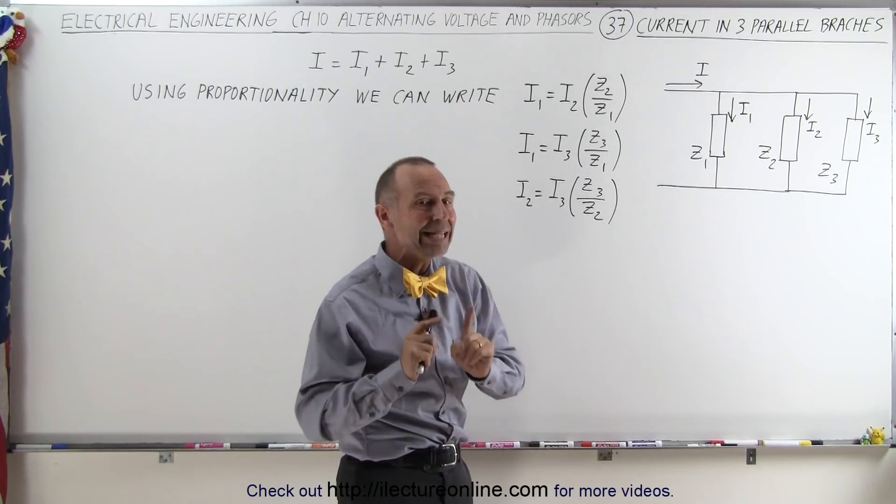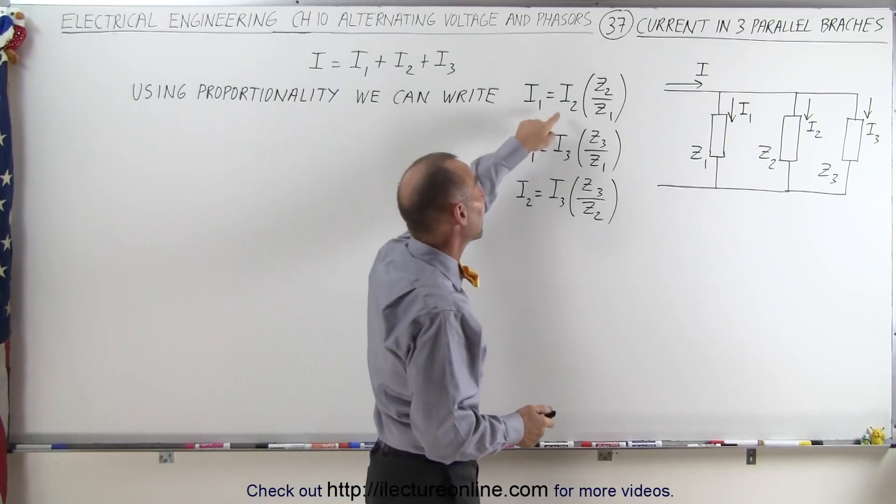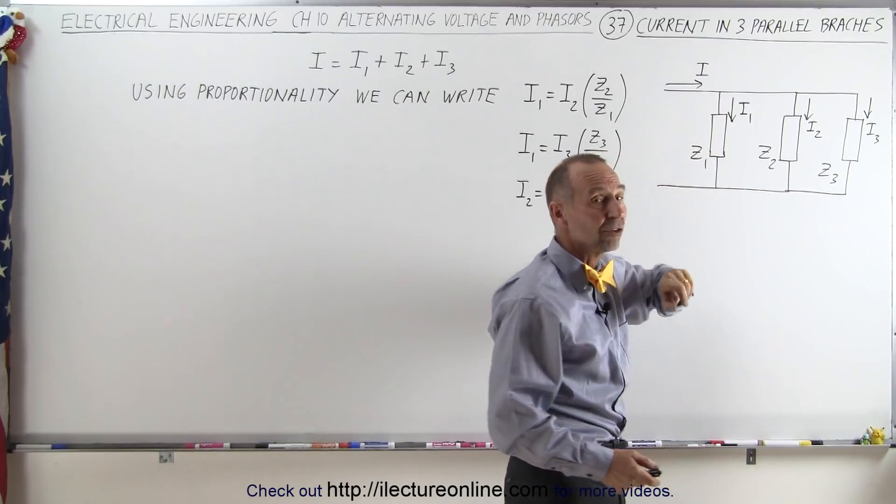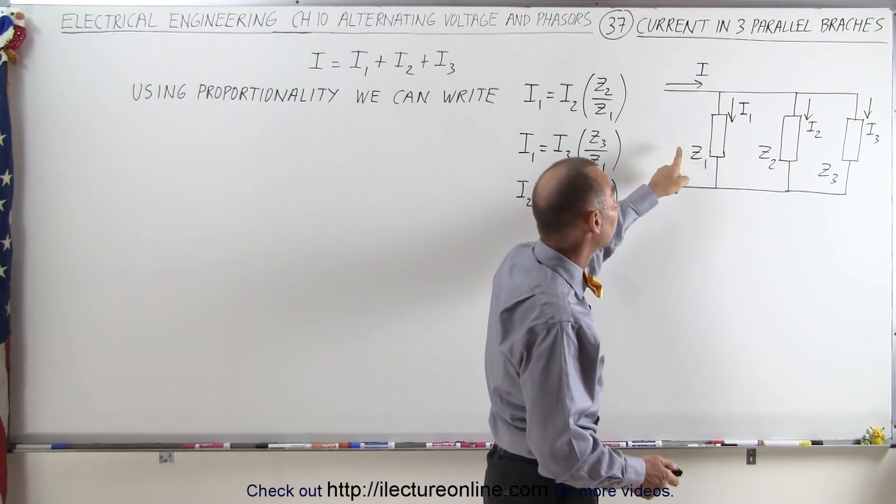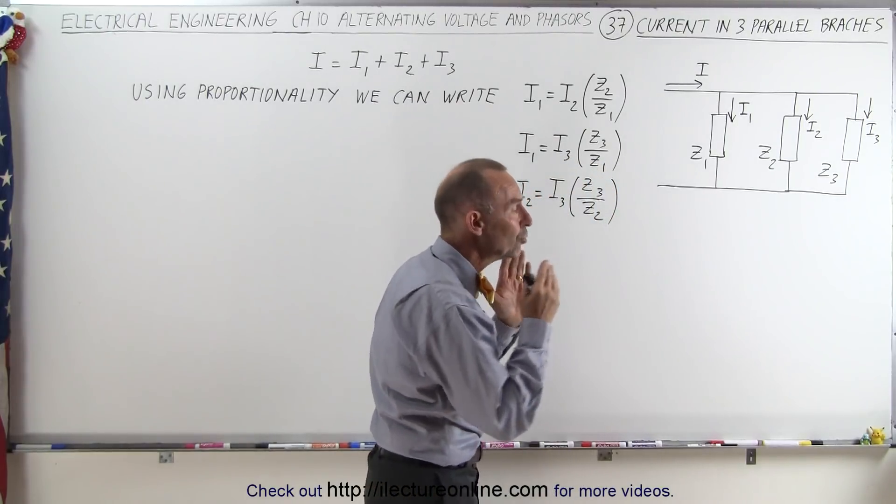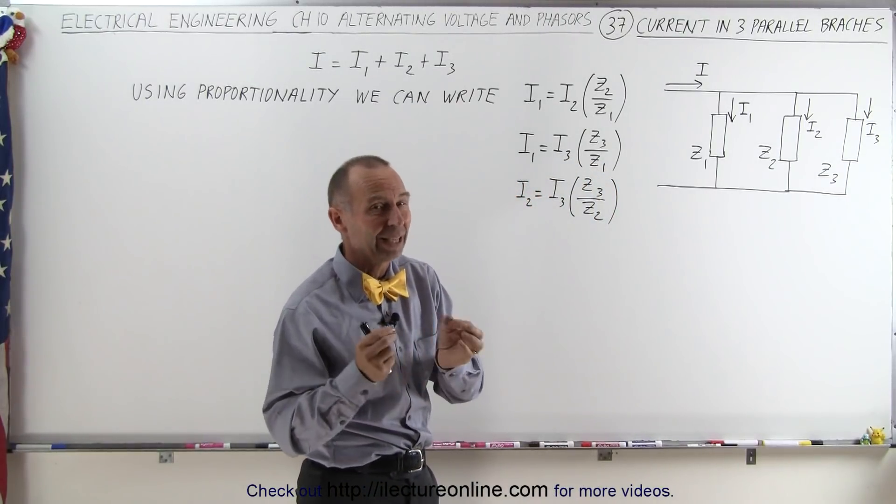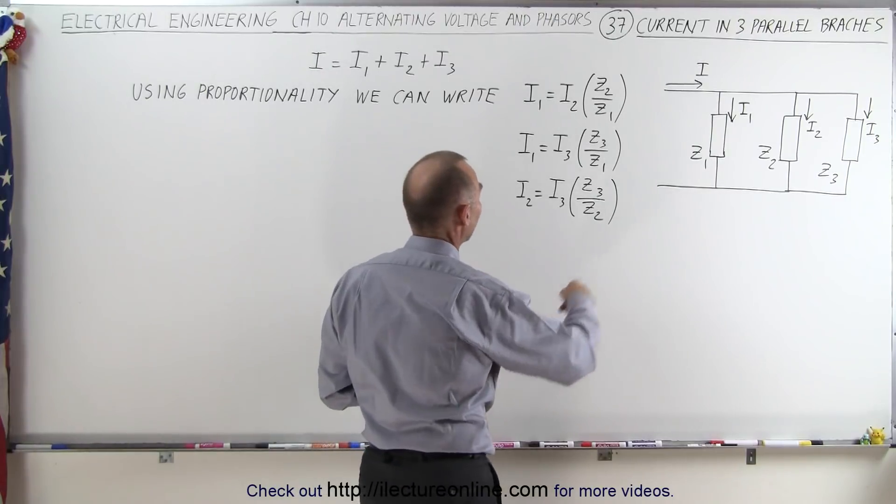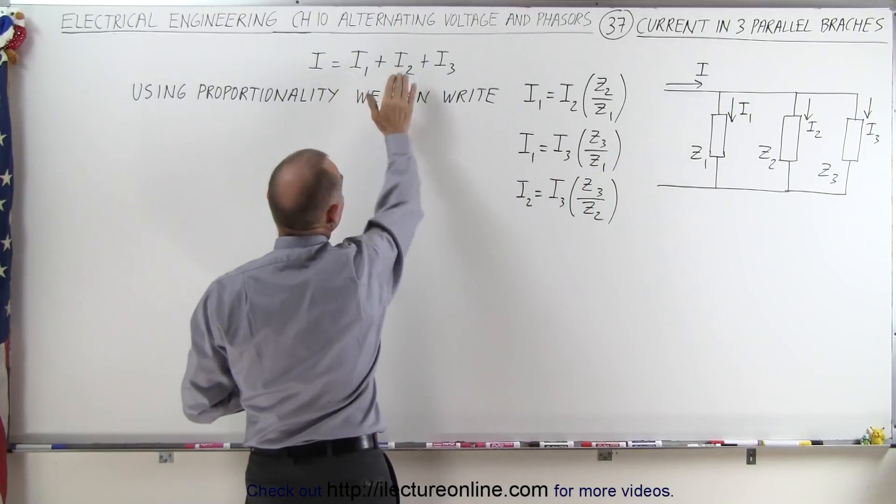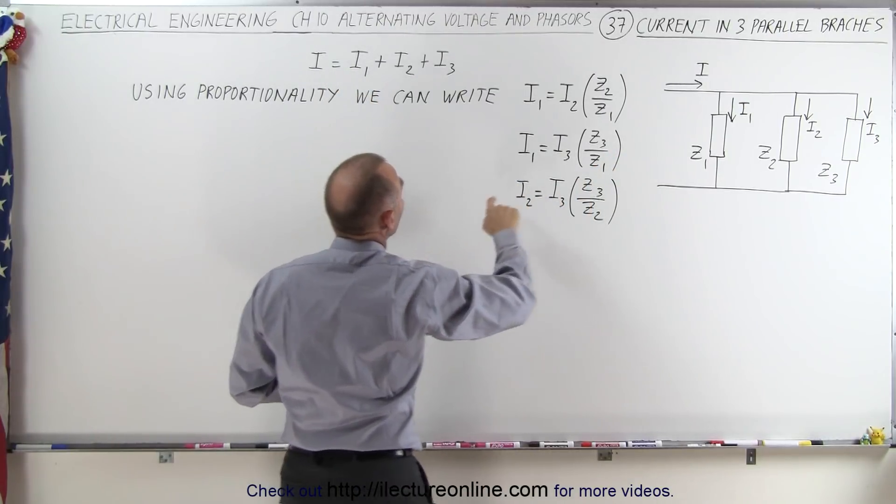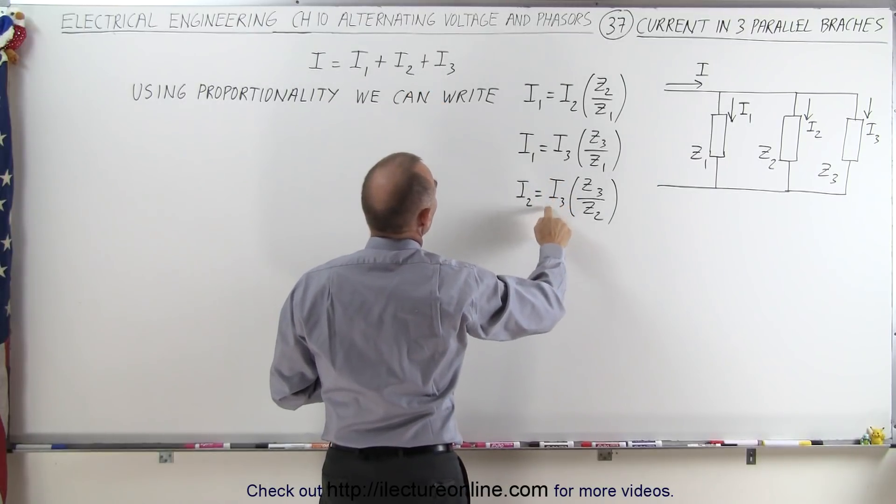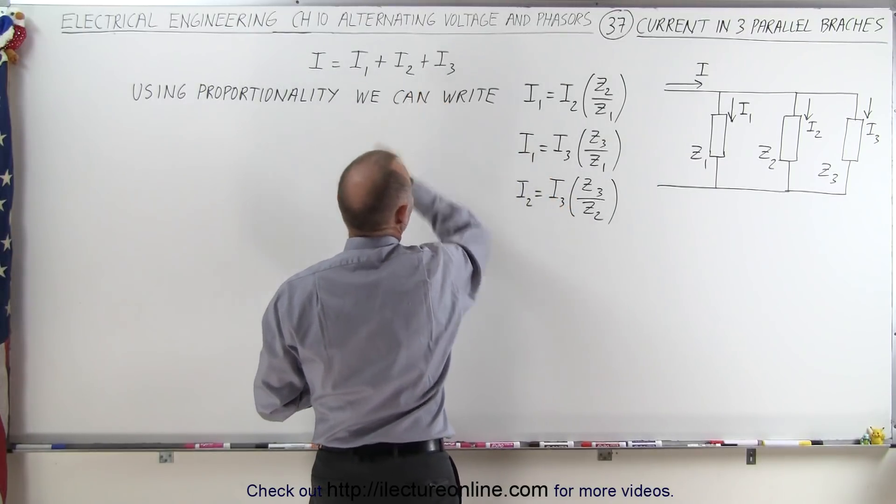We can do that with any two branches. Another way of looking at it is, if the impedance in the second branch is three times the impedance in the first branch, then the current in the first branch will be three times the current in the second branch, and so forth. So we can compare any two parallel circuits like that. It's a very handy process. And so here we now have three comparisons which we can plug in. We can plug in the equivalent current for I2, and we can plug in the equivalent current for I3 in terms of I1.